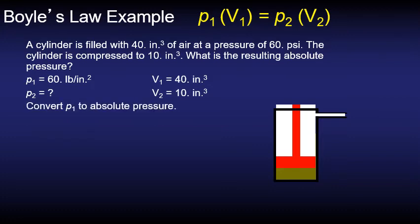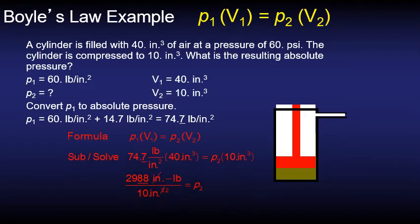We need to find p2 but we need to find the absolute p2. So first we need to convert p1 to absolute pressure and so we're going to do that by just adding the atmospheric pressure of 14.7 psi. So we're given 60 psi, we add on the 14.7 psi and we have 74.7 psi. We substitute and solve, put our numbers in and our answer ends up being 300 psi absolute pressure.